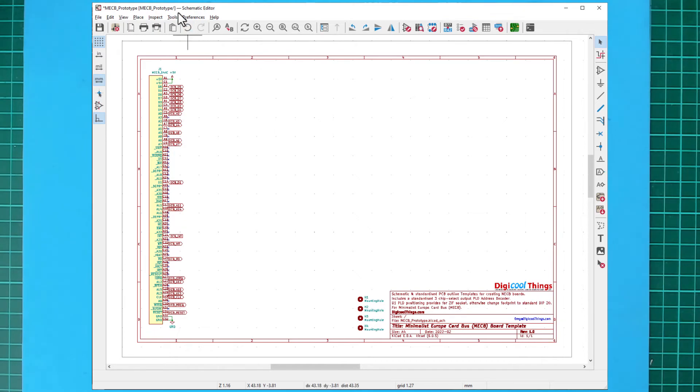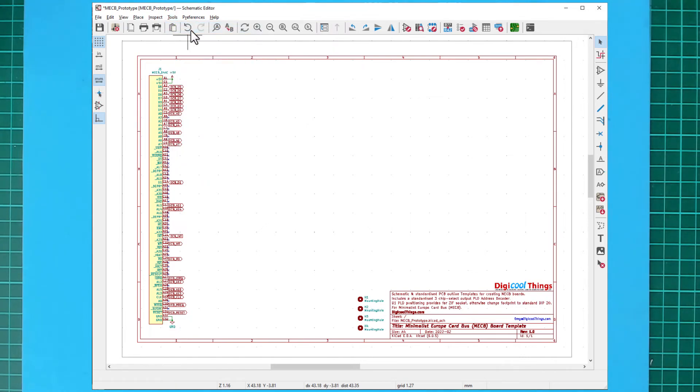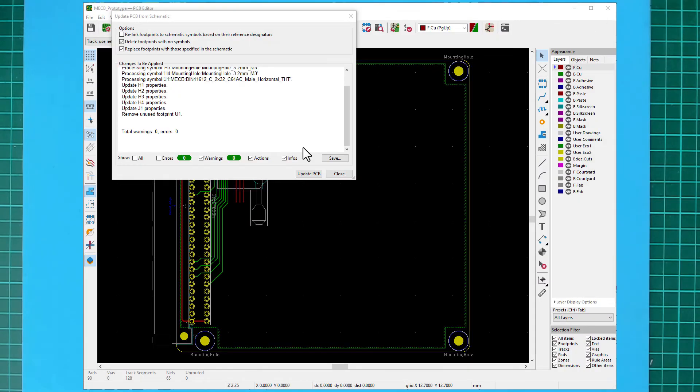Then in the tools menu, we can update PCB from schematic, which you notice is an F8 hotkey as well. And with the update PCB dialog, we can just leave the defaults and select update PCB and close.